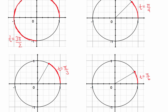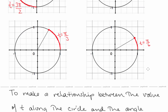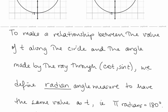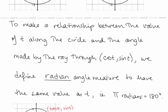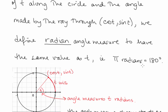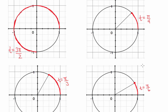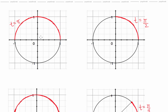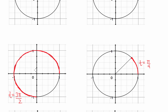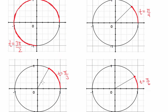These are common values you see with trig evaluations. To make a relationship between the value of t along the circle and the angle made by the ray through the point (cos t, sin t), we define radian angle measure to have the same value as t. So we're now calling this angle π radians, this angle π/2 radians, this angle 3π/2 radians, π/4 radians, π/3 radians, and π/6 radians.